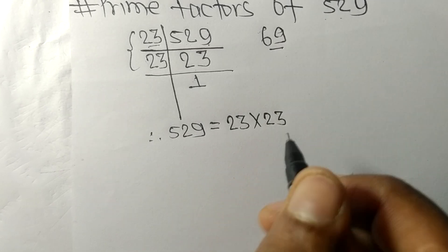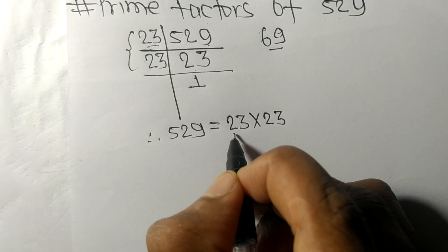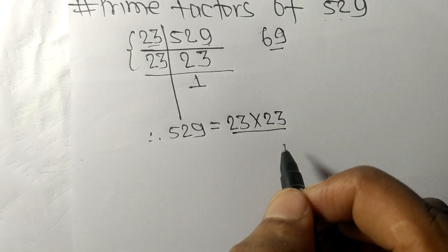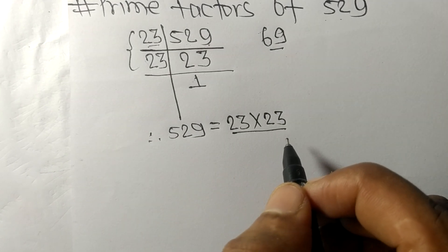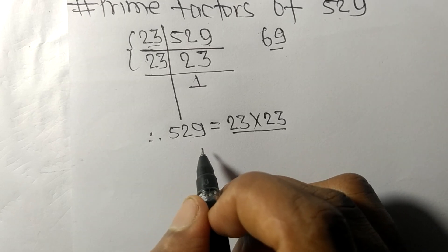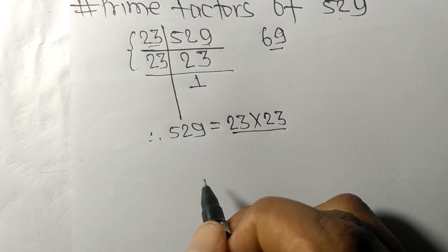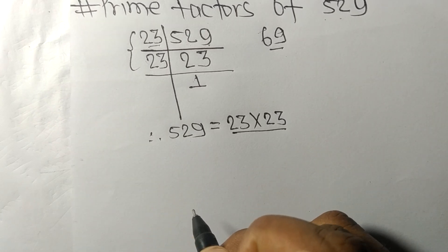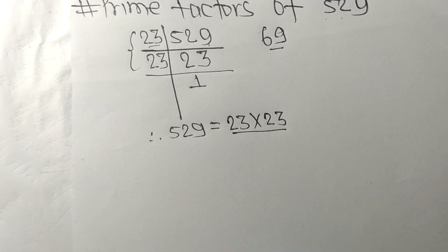So 23 and 23 are the prime factors of 529. That's all for today, thanks for watching.